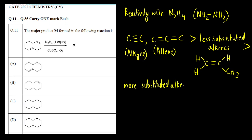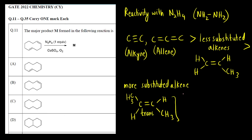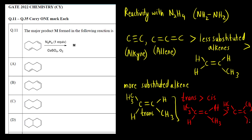For a di-substituted alkene such as CH3-CH=CH-CH3, there is the possibility of cis and trans. The trans alkene, where similar or higher priority groups are on opposite sides of the double bond, is more reactive than the cis alkene. So you have to remember: trans is more reactive than cis.